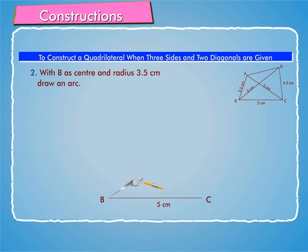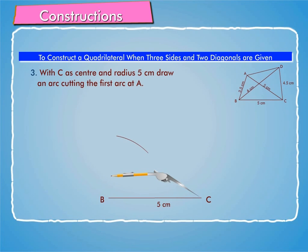Step 2: With B as center and radius 3.5 cm, draw an arc. Step 3: With C as center and radius 5 cm, draw an arc cutting the first arc at A.